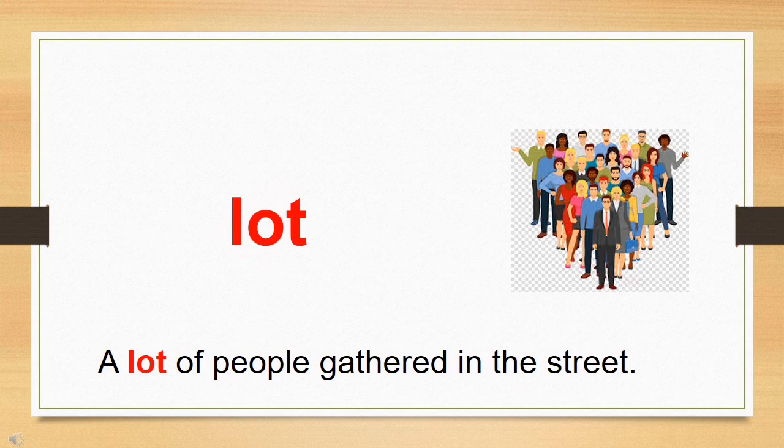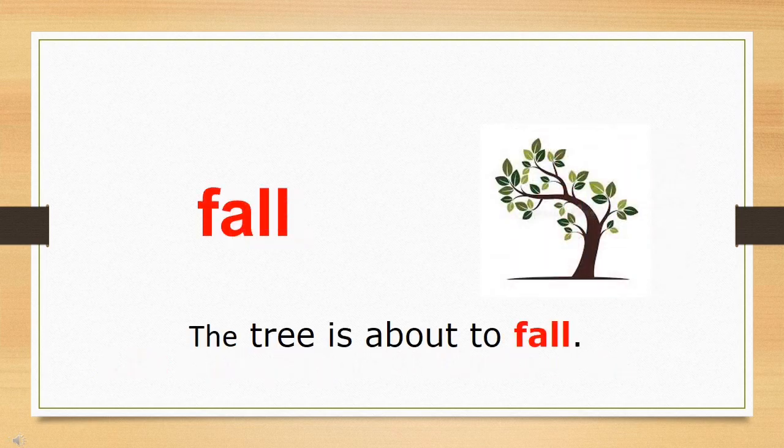Lot. The word is lot. Children, we use this word when we are indicating a group or a bunch or a set of objects. For example, you can see in the picture there are many people. So, we can use this word in sentence like this. A lot of people gathered in the street. You can see there are not one or two or three people but there are many people. So, that is why instead of many, we can use lot of.